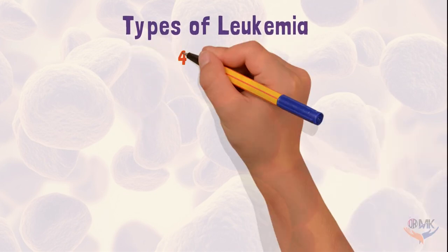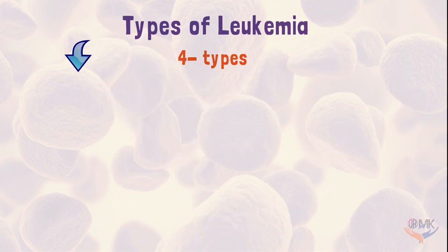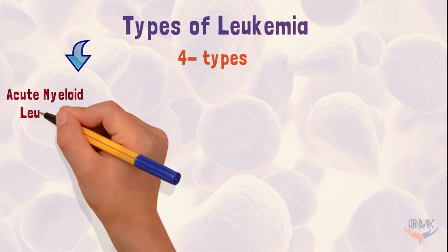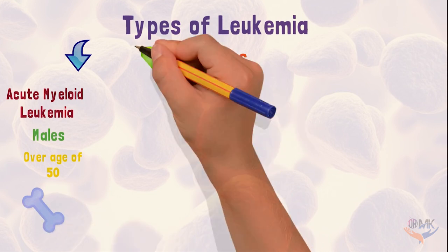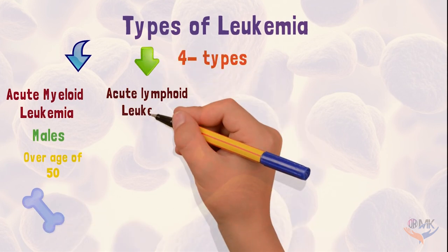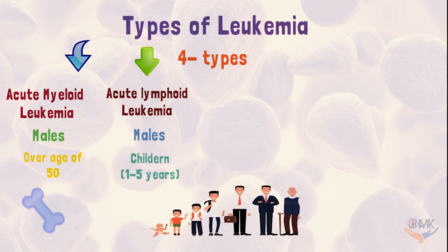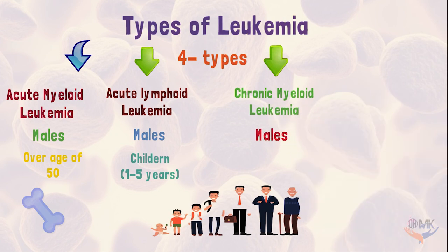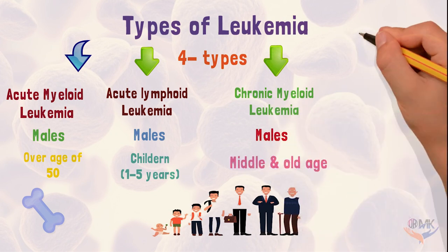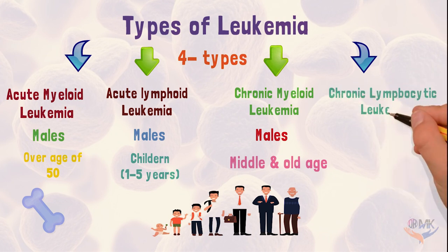Moving on to the types of Leukemia, there are four types. The first is acute myeloid leukemia, which is common in males over the age of 50. The second is acute lymphoid leukemia, common in children, specifically males. The third is chronic myeloid leukemia, common in males of middle and old age. And the last is chronic lymphocytic leukemia, again common in males of old age.